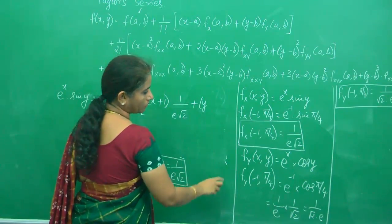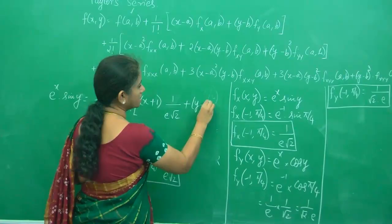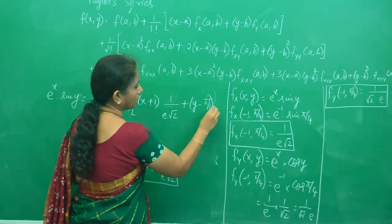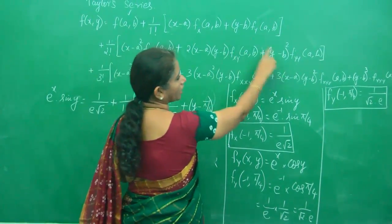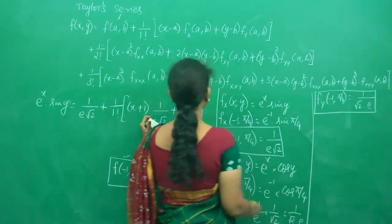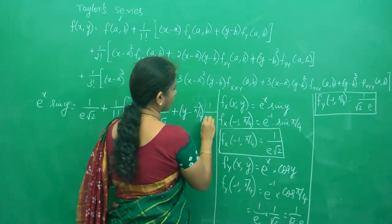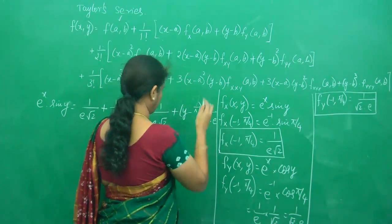What is b? b was π/4. So (y - π/4) times f_y(a,b). What is f_y(a,b)? 1/(√2 · e).